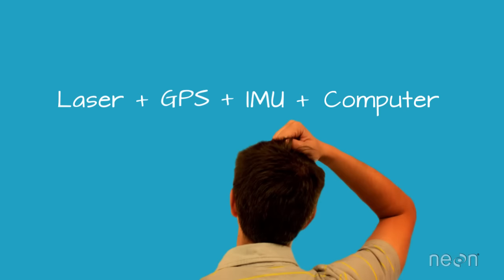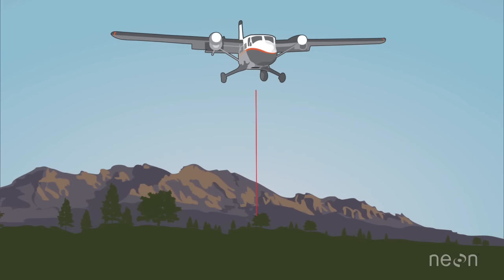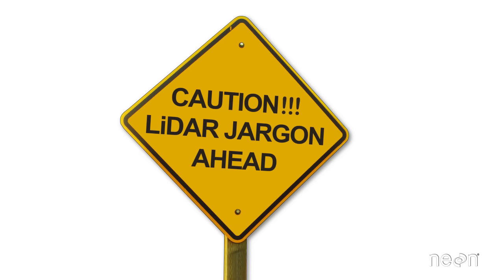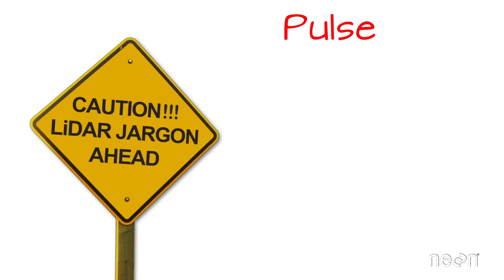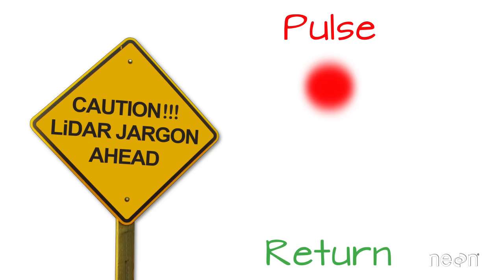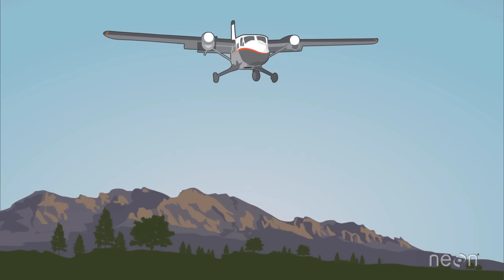You may be wondering how the laser, the GPS, the IMU, and the computer all work together to get us these fantastically useful LIDAR datasets. The laser in a LIDAR system scans the Earth, actively emitting light energy towards the ground. Let's get two key LIDAR terms out of the way. First, a pulse refers to a burst of light energy emitted by the LIDAR system. Second, a return refers to reflected light energy that has been recorded by the LIDAR sensor. So pulses of light energy travel to the ground and return back to the LIDAR sensor.